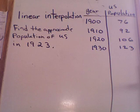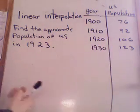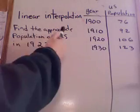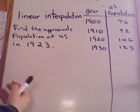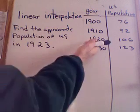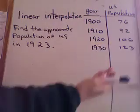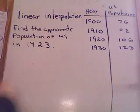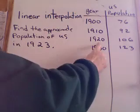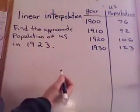Here we go with linear interpolation. It is used when you have some sort of question that relates to a chart of values. For example, find the approximate population of the United States in 1923. They tell you to go look it up in the chart, but there's no 1923 on the chart. We can do linear interpolation to figure out approximately what the 1923 population is.